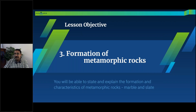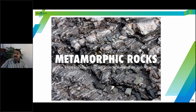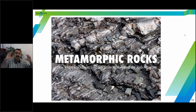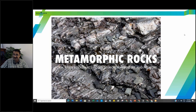Let's continue with the formation of metamorphic rocks. You will be able to state and explain the formation and characteristics of metamorphic rocks — marble and slate. Metamorphic rocks are formed when rocks are exposed to high temperature and pressure. So if you've got an igneous rock or a sedimentary rock and you apply high heat and pressure, it changes into a new rock called metamorphic. This is a secondary rock, not a primary rock.